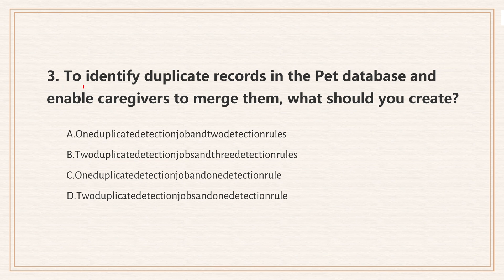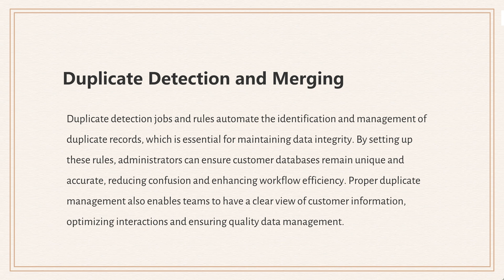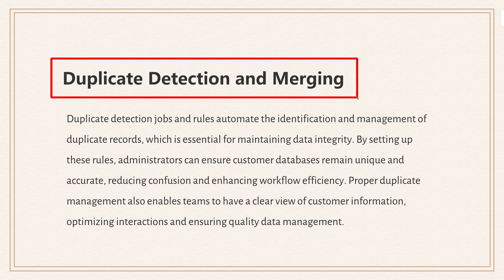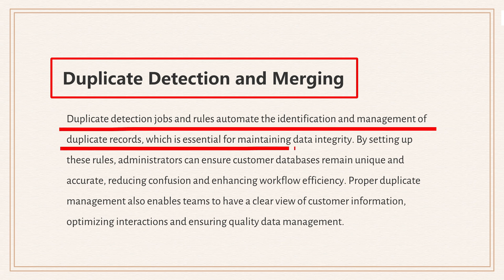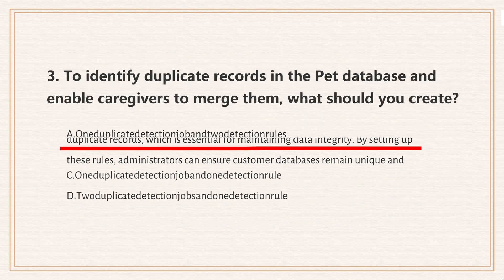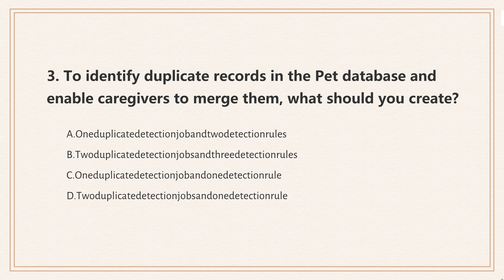Question 3: To identify duplicate records in the pet database and enable caregivers to merge them, what should you create? The knowledge point is duplicate detection and merging. Duplicate detection jobs and rules automatically spot and manage duplicate records, keeping data unique and accurate. This helps avoid confusion and ensures teams work with clean, reliable information. The correct answer is one detection job and two rules — the job scans the data and the rules define what to look for, keeping things simple and efficient.